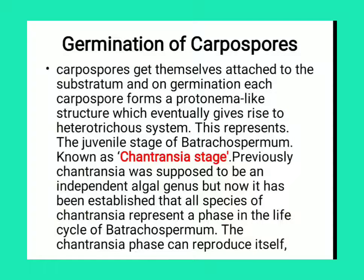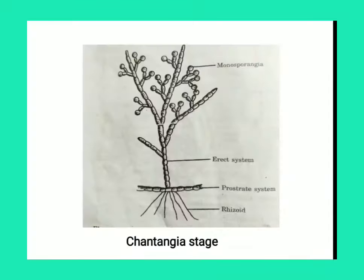Regarding germination of carpospores: carpospores get themselves attached to the substratum, and on germination each carpospore forms a protonema-like structure, which eventually gives rise to a heterotrichous system. This represents the juvenile stage of Batrachospermum. The carpospore germinates into a protonema-like structure, meaning the cell further divides into the heterotrichous system — the erect system and the prostrate system — and this juvenile stage is known as the Chantransia stage.